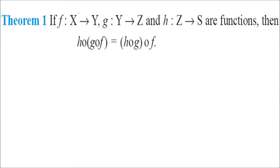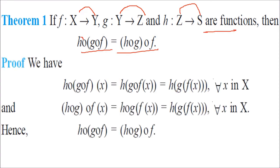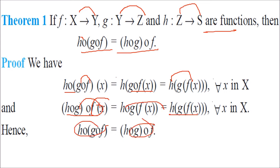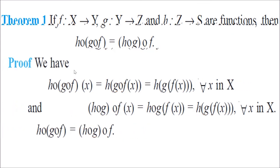For functions f: X → Y, g: Y → Z, h: Z → S, prove ho(gof) = (hog)of. This follows because h(g(f(x))) = h(g(f(x))) — the associativity of function composition. Both sides reduce to h of g of f(x), confirming they are equal.